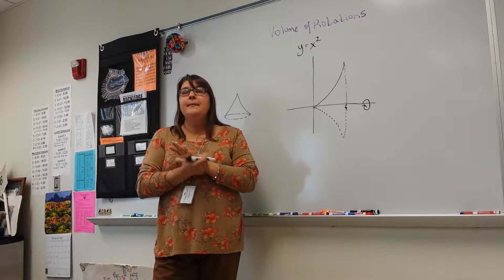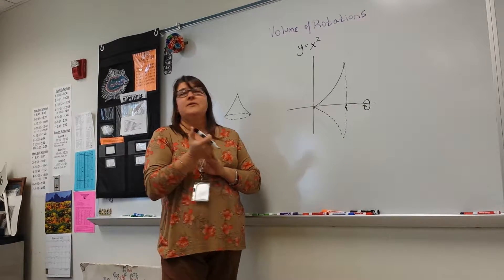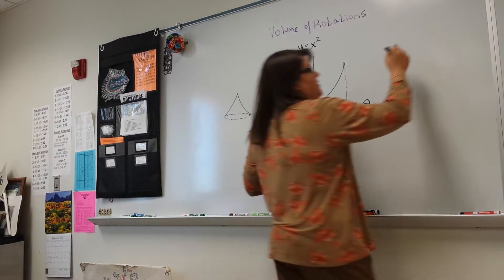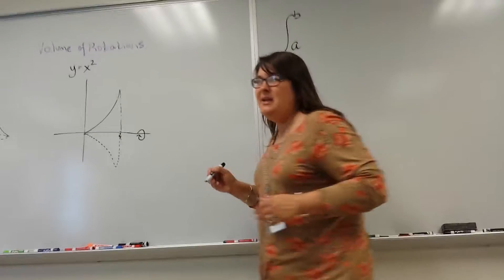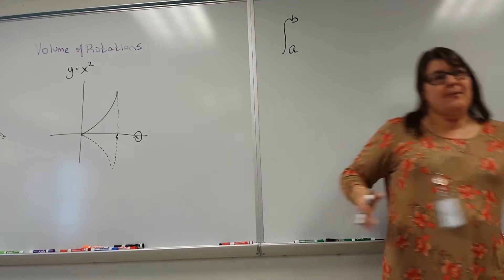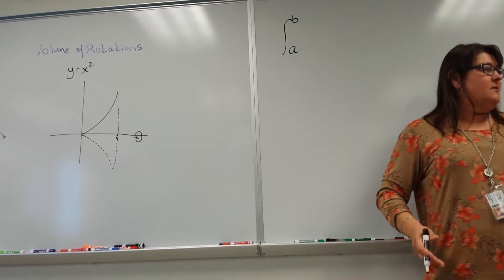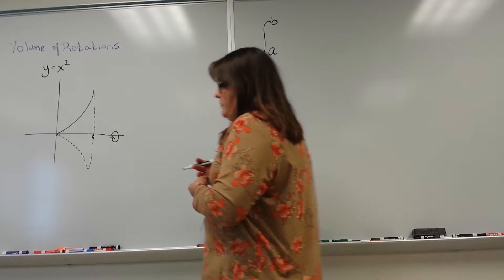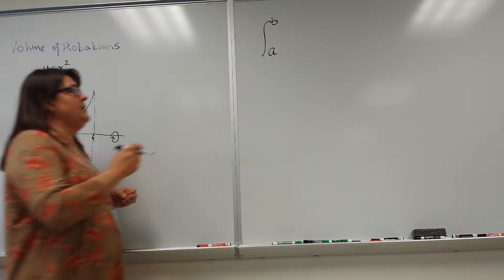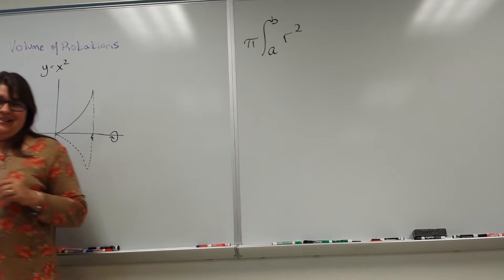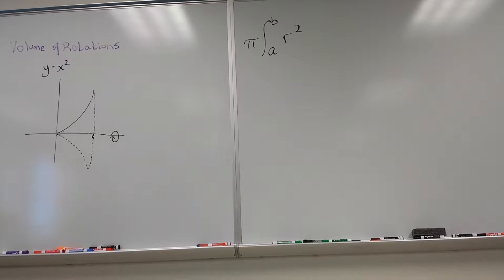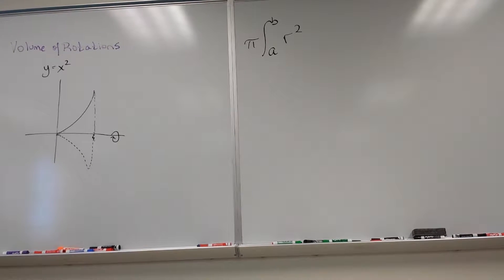To find the volume of something by rotation, you're going to use a formula. The formula is the integral from A to B — what is A to B? Like your wall to wall, my left to right, my x. So it's going to be A to B, and it's going to be pi R squared. So you're going to take the integral of R squared, and pi goes for the ride. What is pi R squared? That's the area of a circle.